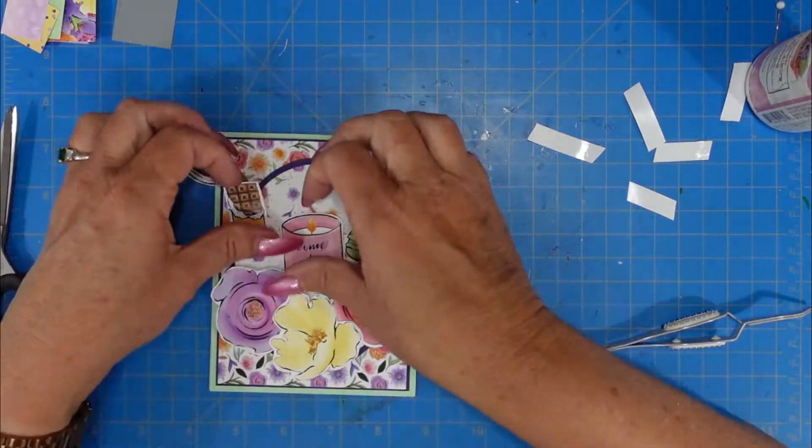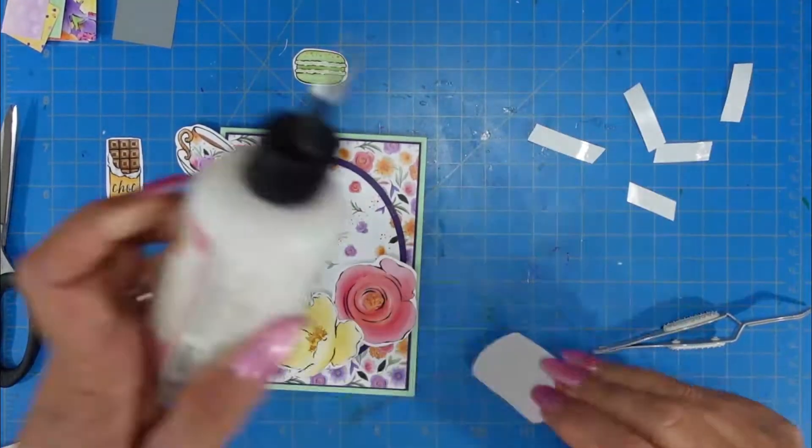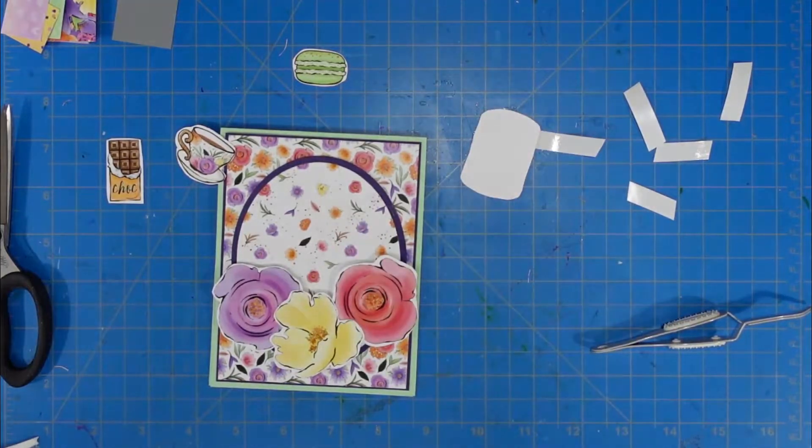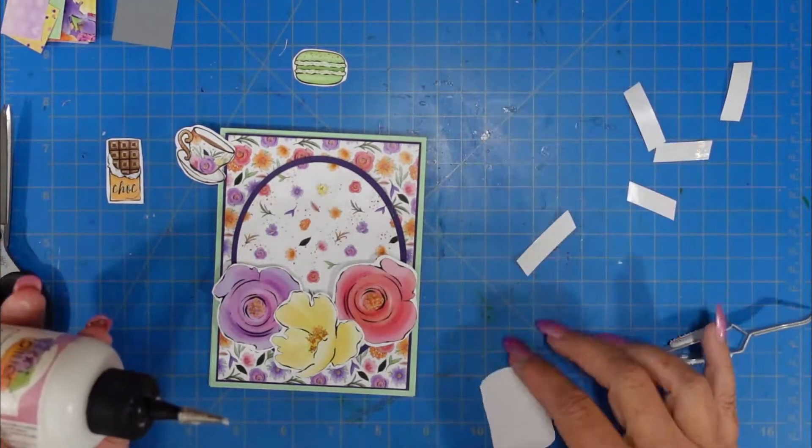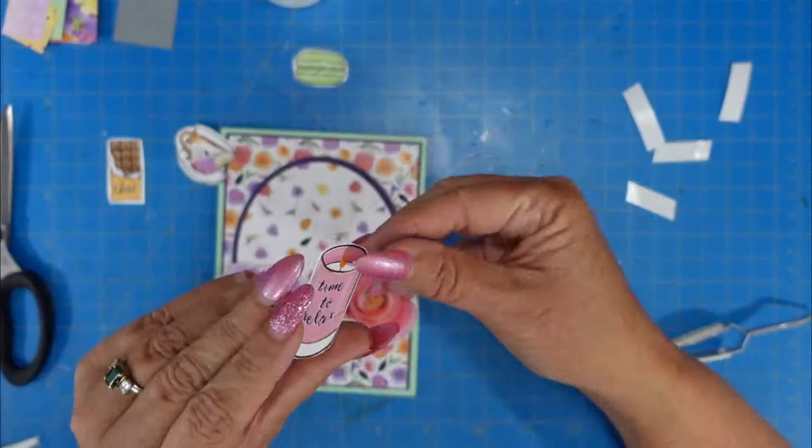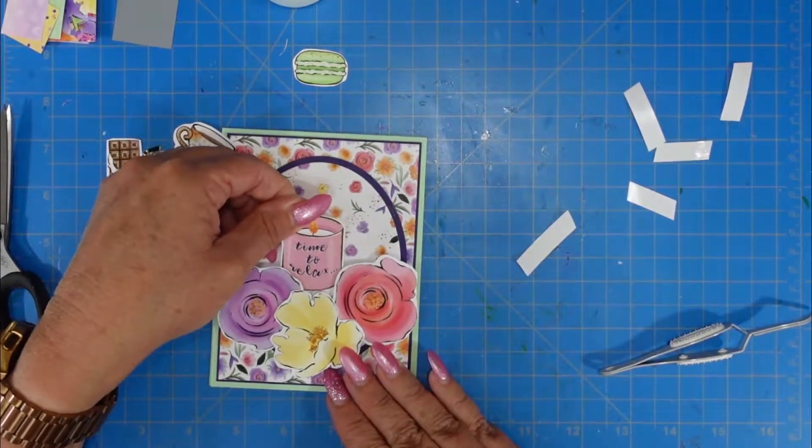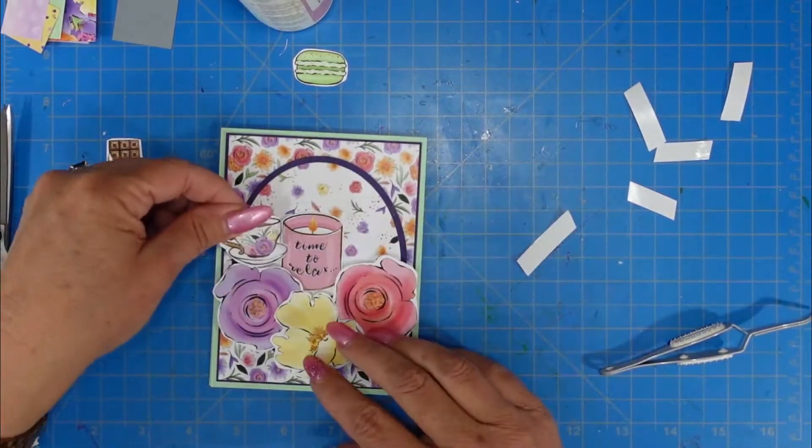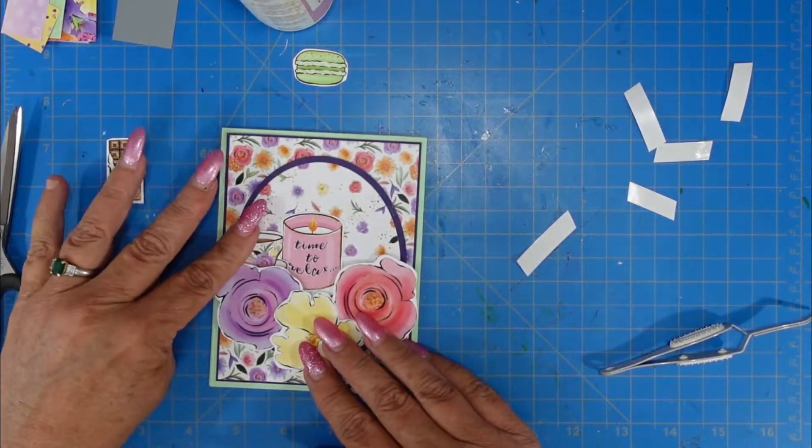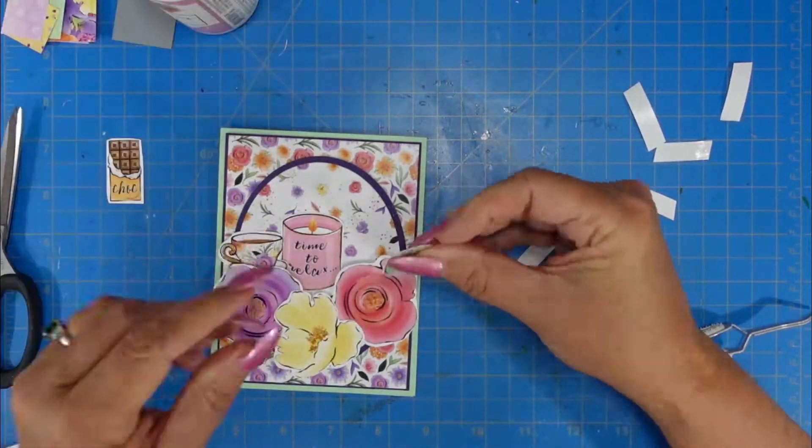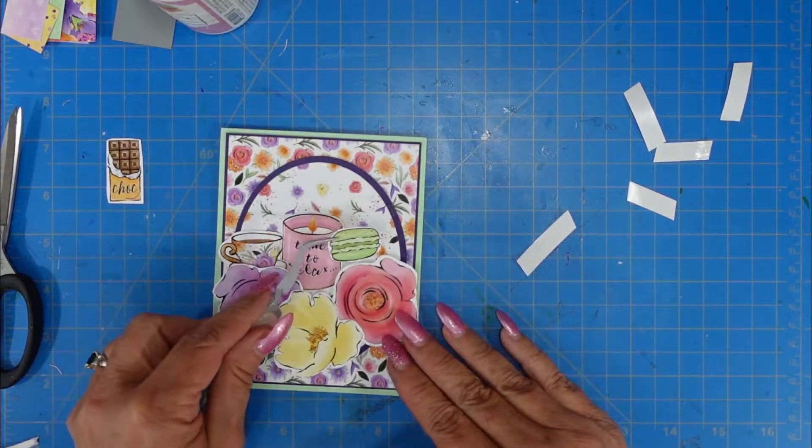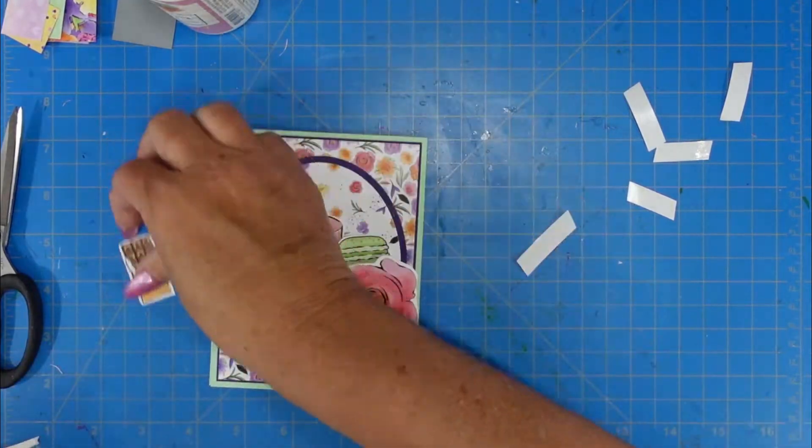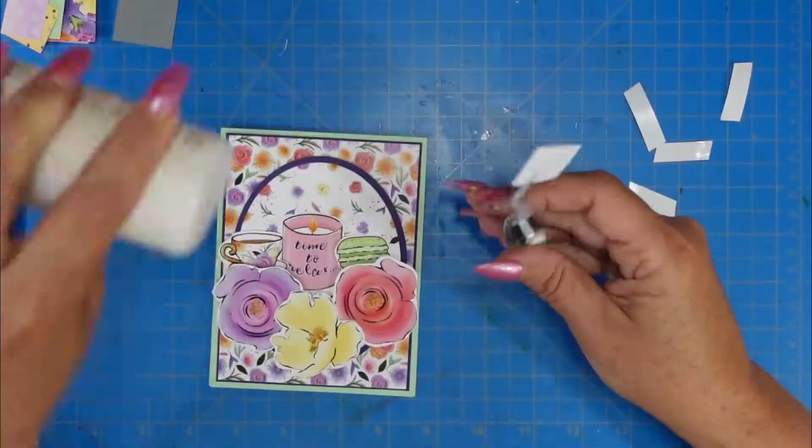And that little teacup is absolutely beautiful. It could be tea or coffee, I guess, and this would also make a good card to put maybe a Starbucks gift card or something like that. This candle right here has a sentiment on it, so that is going to be my sentiment for the card. I didn't add an additional sentiment to this, so it was really quick and easy. And once I get these tucked, this is going to be card number two.